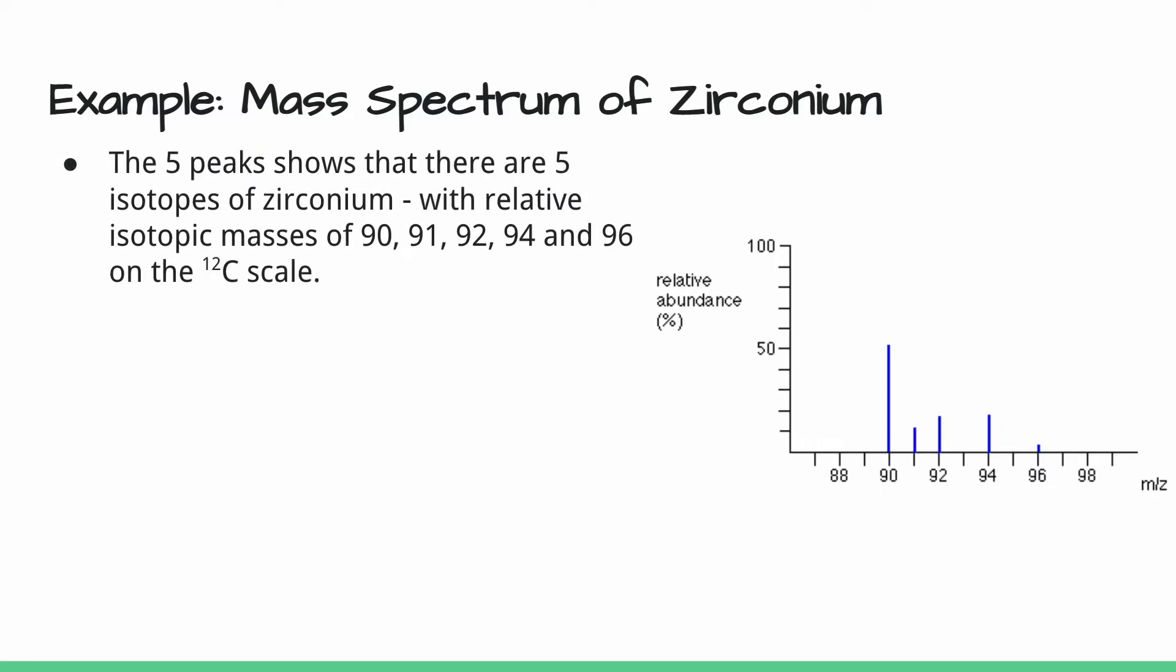We've got five peaks, which means we have five isotopes of zirconium. They have masses of 90, 91, 92, 94, and 96.